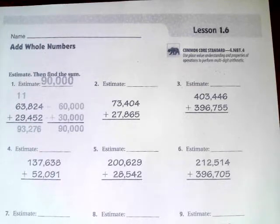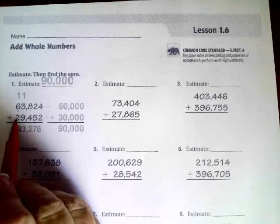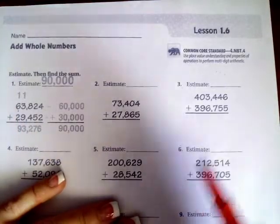Hi guys, welcome to fourth grade, chapter one, lesson six. We're going to go ahead and get started. So we can see in number one that they are rounding to the nearest ten thousand. So that's what we're going to go ahead and do for the rest of these.